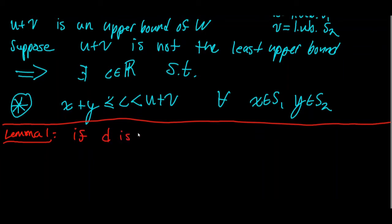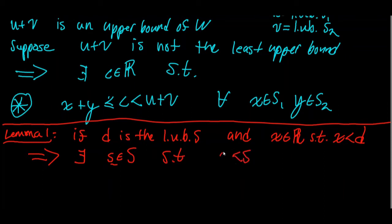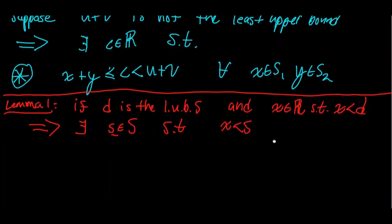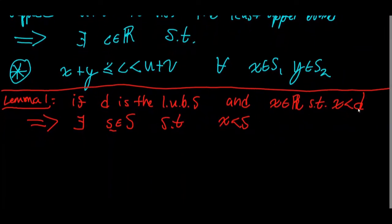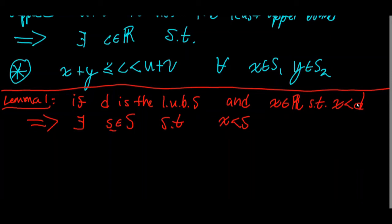Lemma 1: If d is the least upper bound of a set S, and x is in ℝ such that x < d, then there exists an element s in S such that x < s. In other words, given any element strictly less than the least upper bound, we can always find an element in S strictly greater than that element.